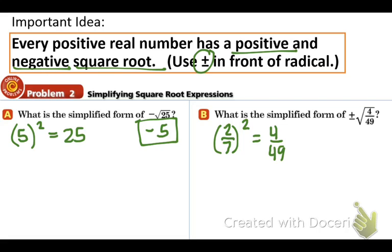But wait a second. What about the negative possibility? Let's try it. Negative 2 over 7 squared. Negative 2 times negative 2 is positive 4. 7 times 7 is 49. And indeed, it does work. We have positive and negative 2 sevenths as our answer.